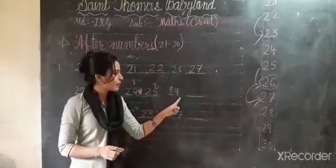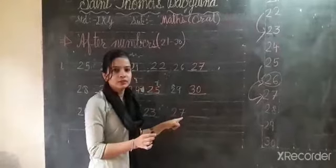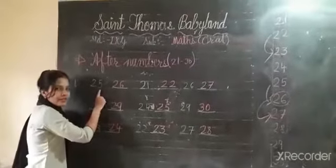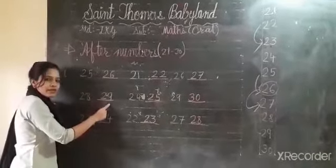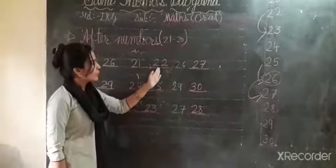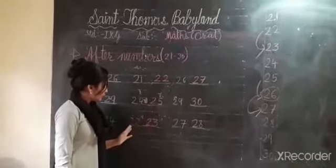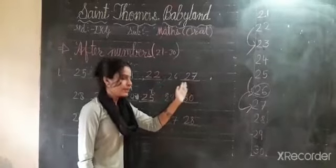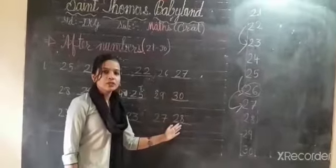Now can you say — 27, then after? 28. 25, after? 26. 28, after? 29. 23, after? 24. 24, after? 25. 22, after? 23. 26, after? 27. 29, after? 30. 27, after? 28. Okay?